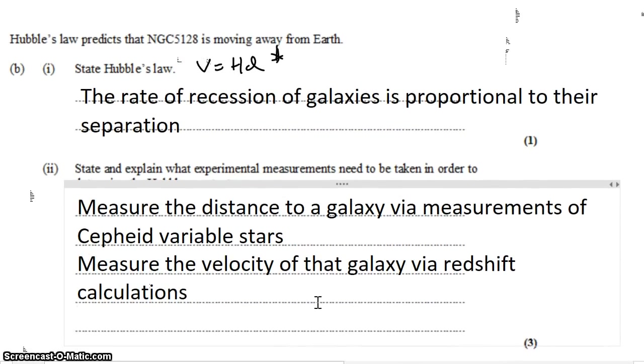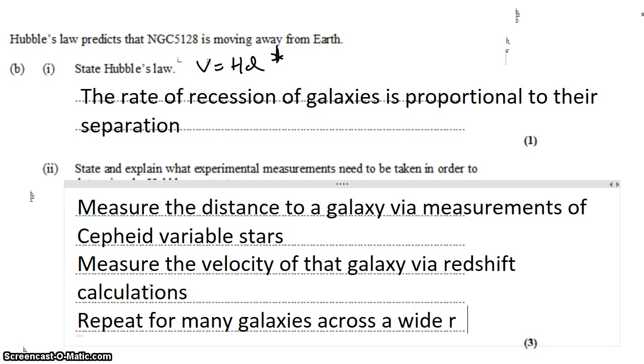Finally, you need to repeat for many galaxies across a wide range of separations or distances. So you want galaxies which are near and galaxies which are far because distance would be your x variable, velocity would be your y variable, and H would be your slope. So you want a nice big graph to get that H out of.